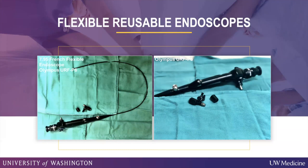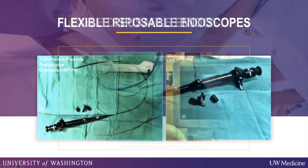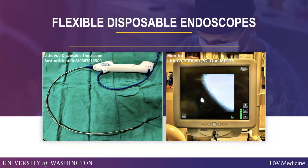Here are a couple of the endoscopes we use. This is a standard reusable flexible endoscope — a ureteroscope used by urologists. Most have a tail where you can fan the beam to see what you're looking at, plus an attachment area for a camera and light source. This is one of the original disposable scopes, the LithoVue, a predecessor to the SpyGlass Discover. It comes with its own monitor, is urology-based, single-use, and very easy to use off the shelf.